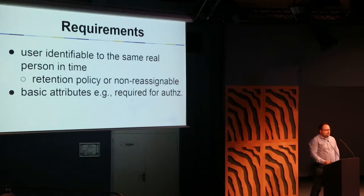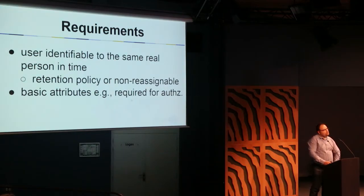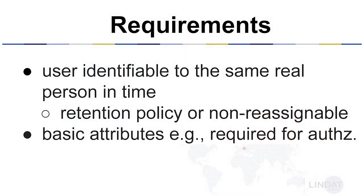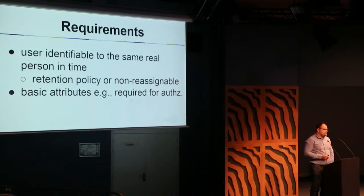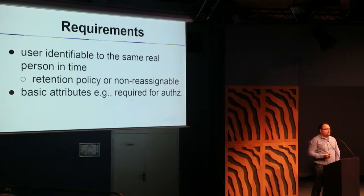As a service provider, you also have to have some requirements put on these identities. These are by no means the only requirements, but these are the basic ones. First of all, you would like the user to be identified to a real person in time and also to the same person in time — so when someone signs a license, it would be nice in five years to know who signed it and that it is the same person. And also if your service requires more information like an email, affiliation, entitlement, or organization, you should get these basic attributes.